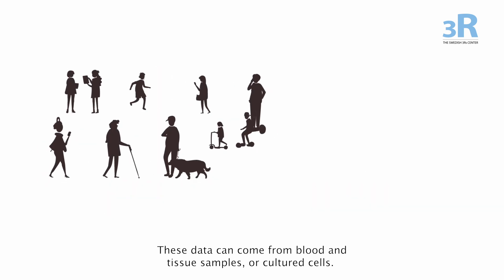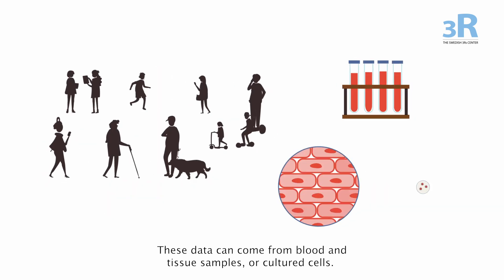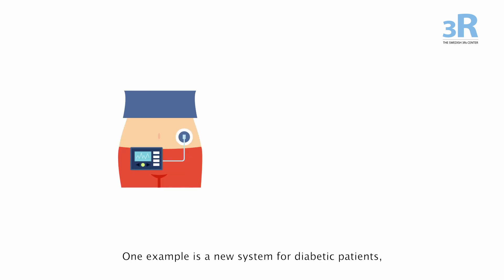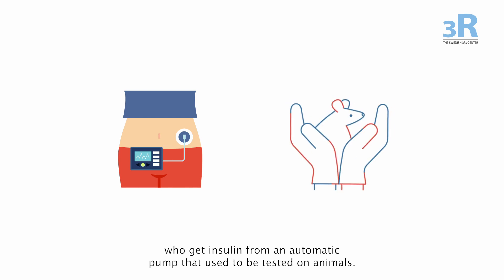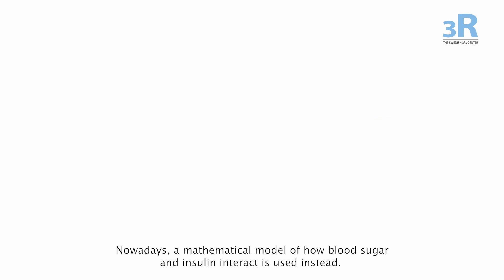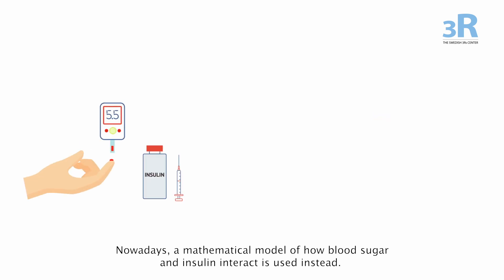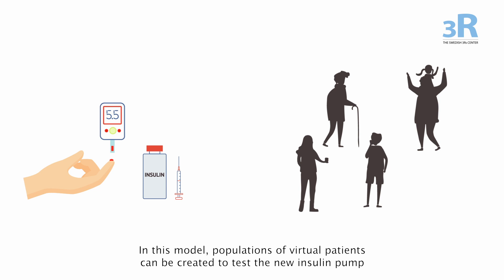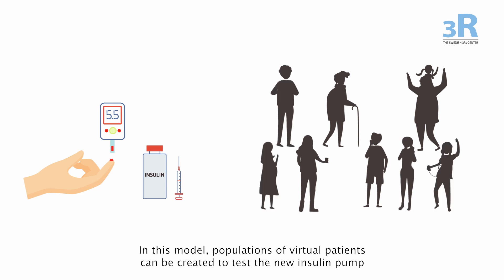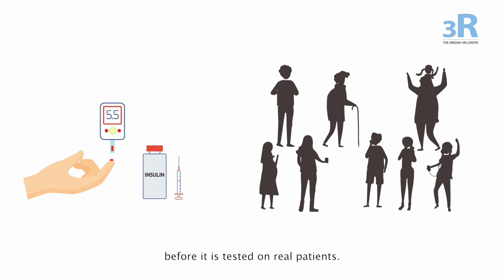One example is a new system for diabetic patients who get insulin from an automatic pump that used to be tested on animals. Nowadays, a mathematical model of how blood sugar and insulin interact is used instead. In this model, populations of virtual patients can be created to test the new insulin pump before it is tested on real patients.